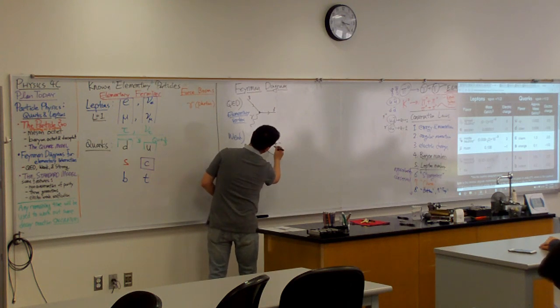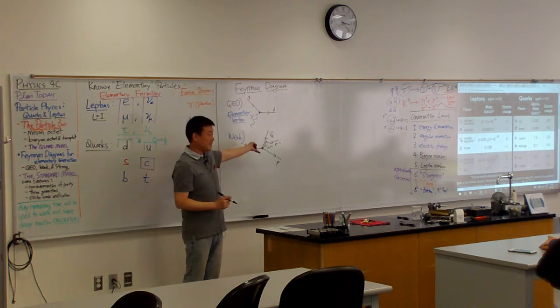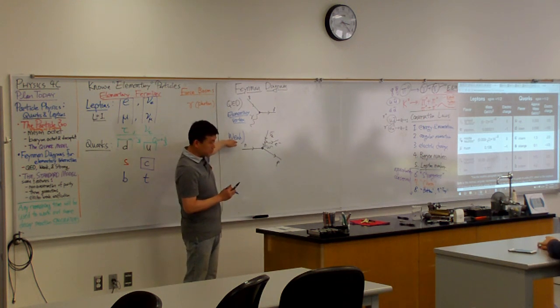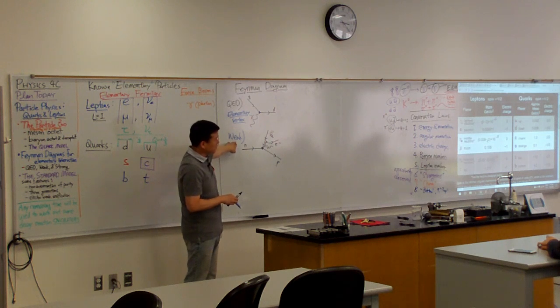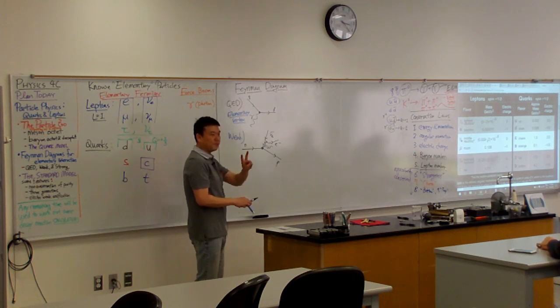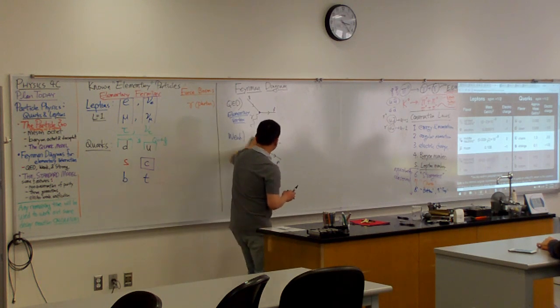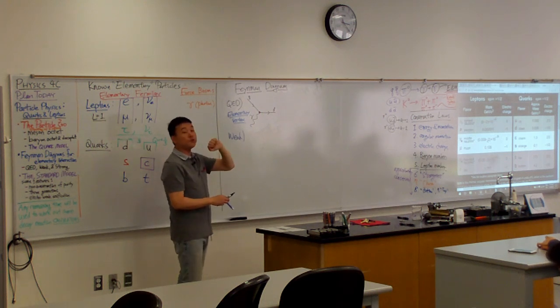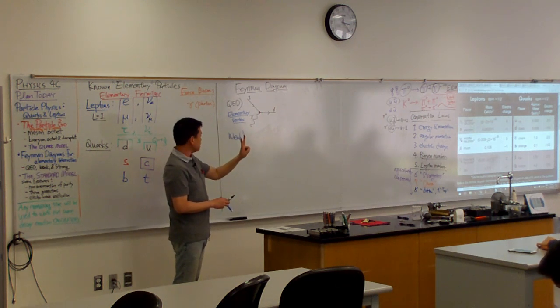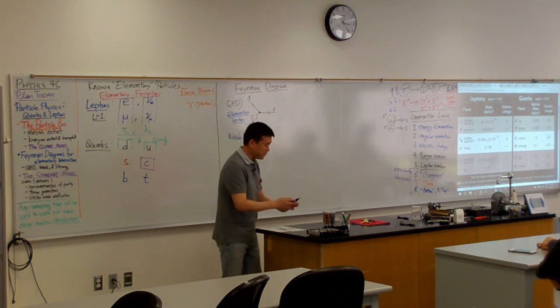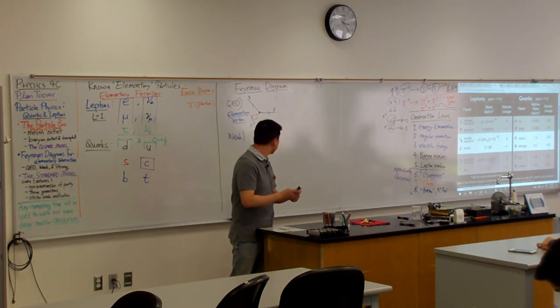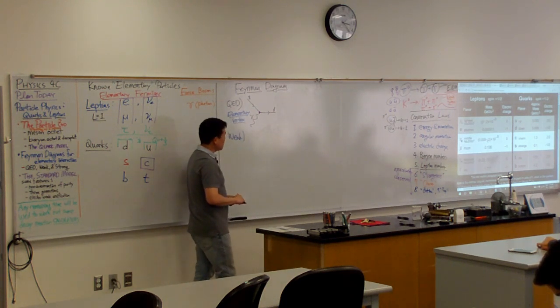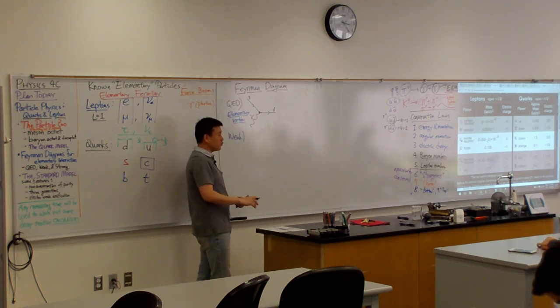The real version is that this emits a W boson, which decays into these two. W minus. I drew this last time. Let me give you the elementary vertexes for the weak interaction. And in the process, I'm going to really need to introduce three more particles. Actually two more because two of them are anti-particle of each other. Let me draw the elementary vertexes. Actually there are three.